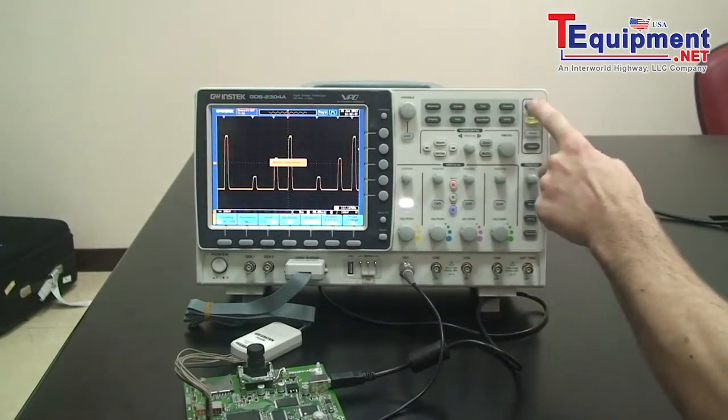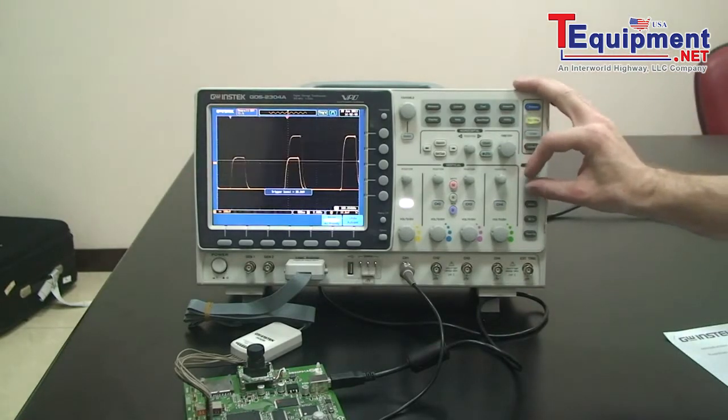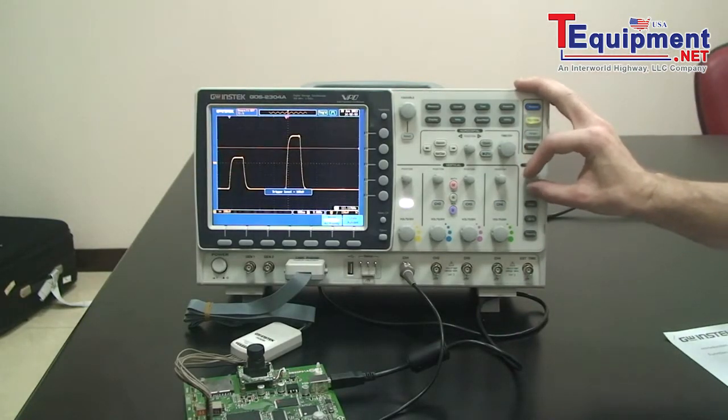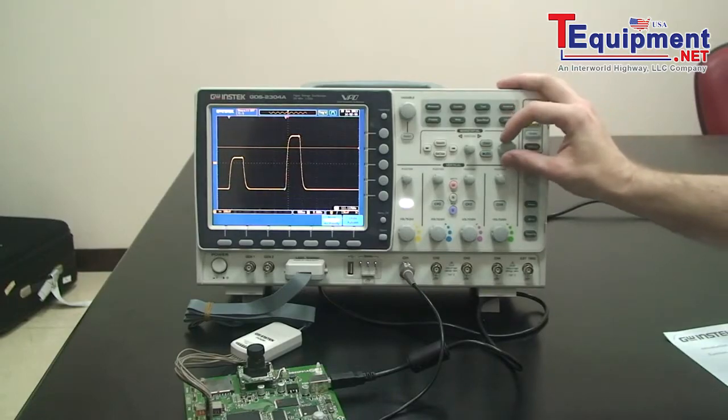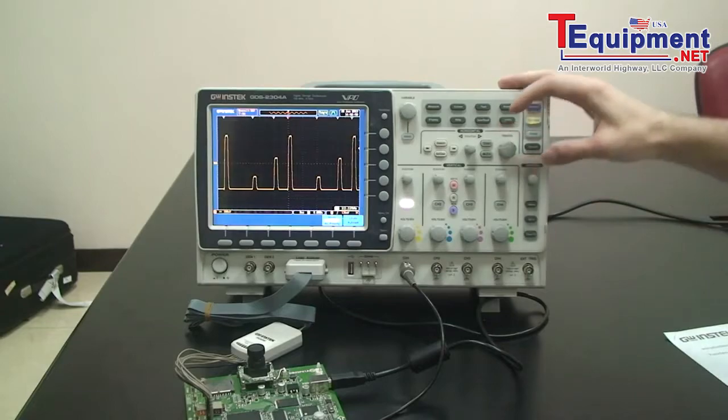I'll turn on channel 1 and press the auto set key. I'm going to increase the trigger level so this becomes stable, and then change the time division to 2 microseconds to see more of the display.